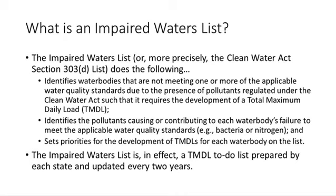Now I'm going to talk about the impaired waters list, which for the purposes of this presentation you can think about as the legal framework around which water quality monitoring is based and feeds into. The impaired waters list does the following things: states use their water quality monitoring data to identify impaired waters that are not meeting water quality standards and need total maximum daily loads, or TMDLs. The list identifies the pollutants causing those impairments. The list also allows states to set a priority ranking for those impaired waters for the development of TMDLs. You can think about the impaired waters list as, in effect, a TMDL to-do list that states prepare and update every two years.